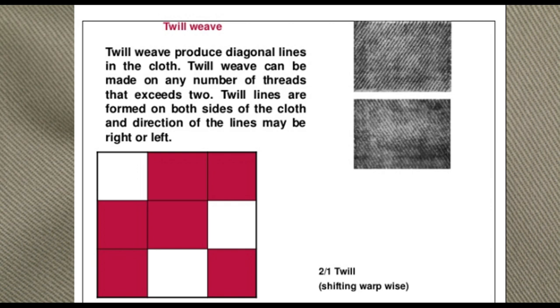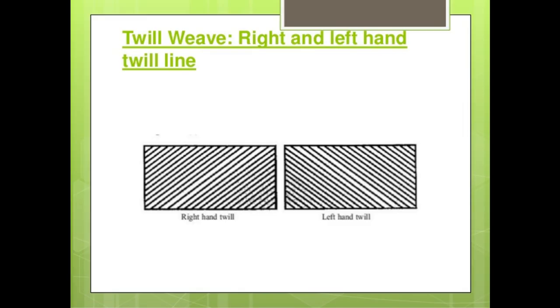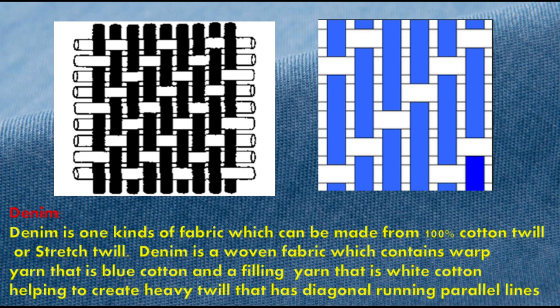Twill weave can be made on any number of threads. Twill lines are formed on both sides of the cloth and the direction of the line may be right or left. Now, what is denim? Denim is one kind of fabric which can be made from 100% cotton twill or stitched twill. Denim is an open fabric which contains warp yarn that is blue cotton and a filling yarn that is white cotton.